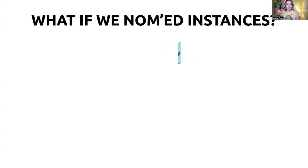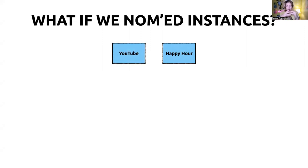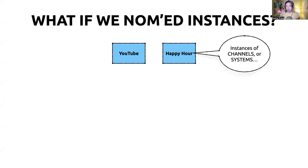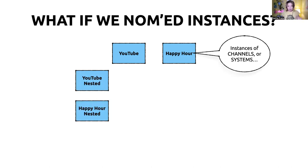So what if we nommed instances? Let's take two things that we just broke down to be very meta. We've got 'OUX Happy Hour' — an instance of a meetup group — and we've got YouTube. If I'm looking at these in the context of my world, these are actually instances of channels or systems. I put YouTube and Happy Hour in a little Nested Object Matrix and start thinking about the intersections. YouTube to YouTube: asking for follows, cross-referencing videos, doing the little card thing — 'Hey, watch this other video next.' That's the recursive strategy.